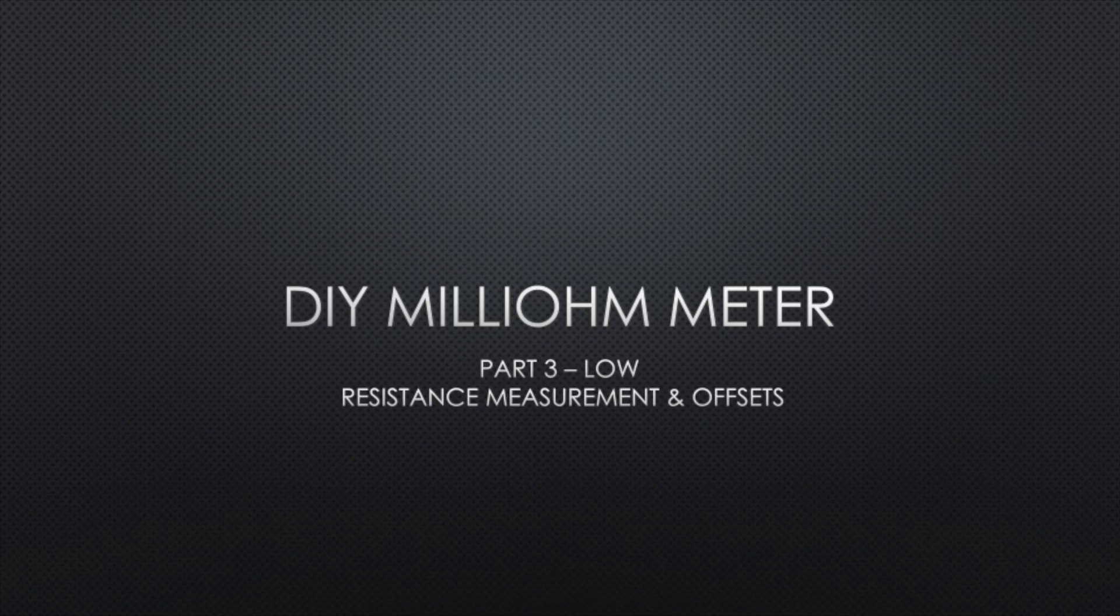This is part 3 of my do-it-yourself milliohmmeter. This time I'm going to look at some low resistance measurement of a solid copper wire and also look at some of the offsets that are possible in the instrumentation amplifier, which are the three LM324s I have inside this instrument. Let's look at that in detail and see how that affects the readings.